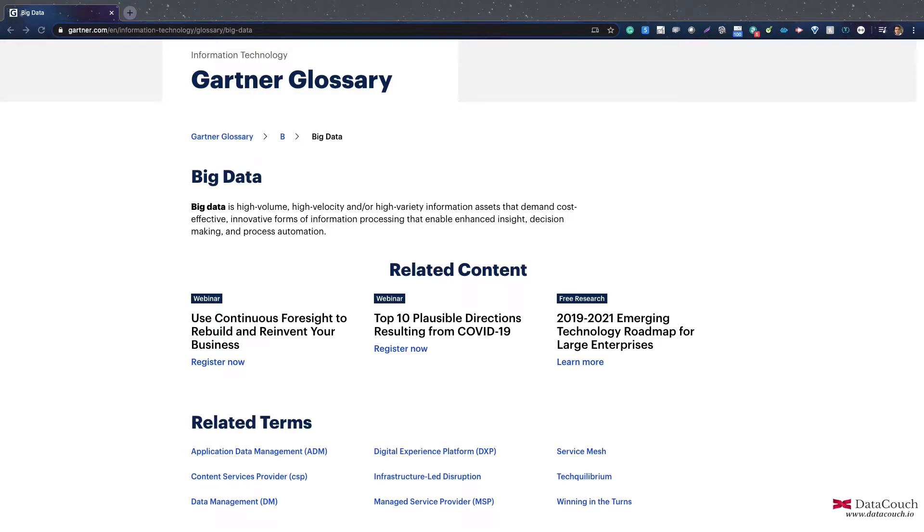Gartner is a global research and advisory firm that defines big data as high volume, high velocity, and/or high variety information assets that demand cost-effective innovative forms of information processing that enable enhanced insights, decision making, and process automation. This is a formal definition from Gartner, but now we'll move to the whiteboard for a more detailed discussion where I'll be adding more context.